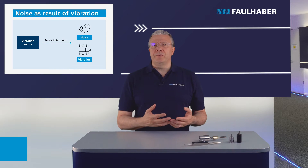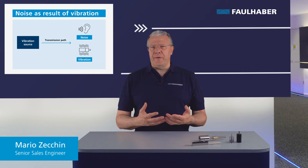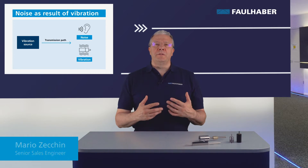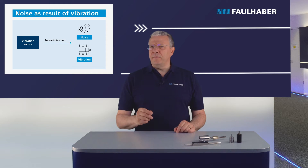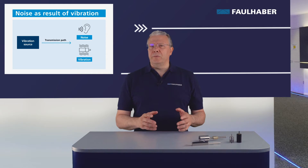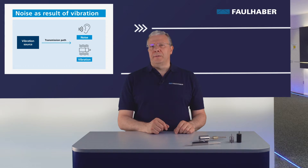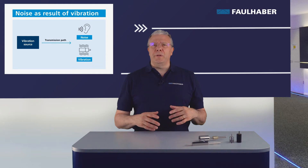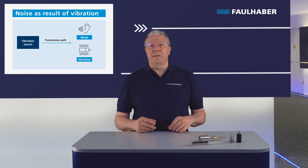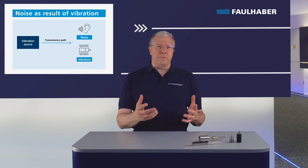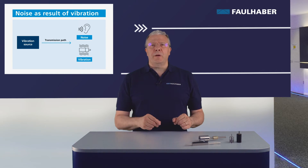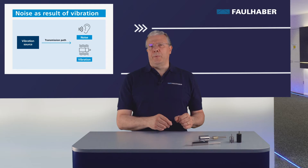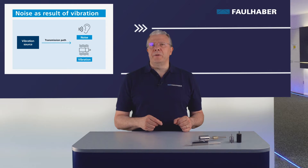Noise and vibration are unwanted effects of any mechanical system. In most cases, the noise is a result of the vibration propagating in the system. Reducing the vibration can also eliminate the audible noise. Noise depends also on the complete application characteristics like resonance frequency and transmission paths. Avoiding the resonance frequencies is already a good starting point in vibration and noise reduction.